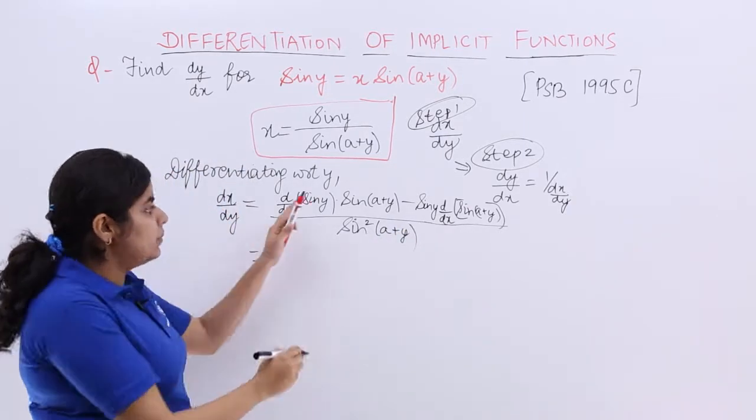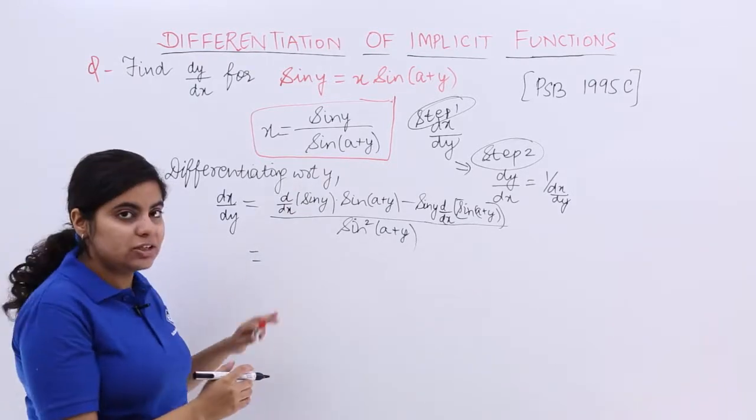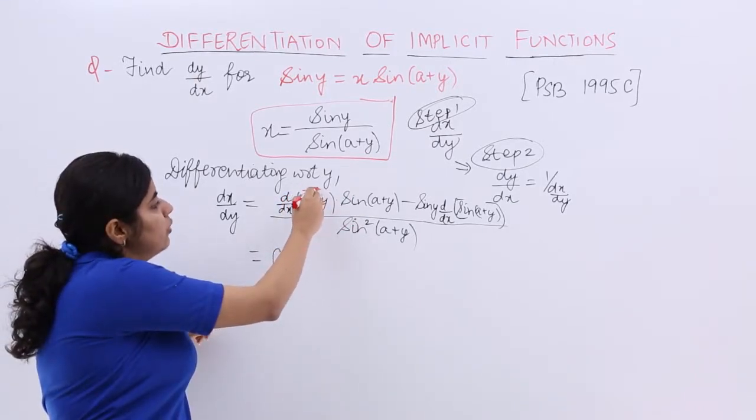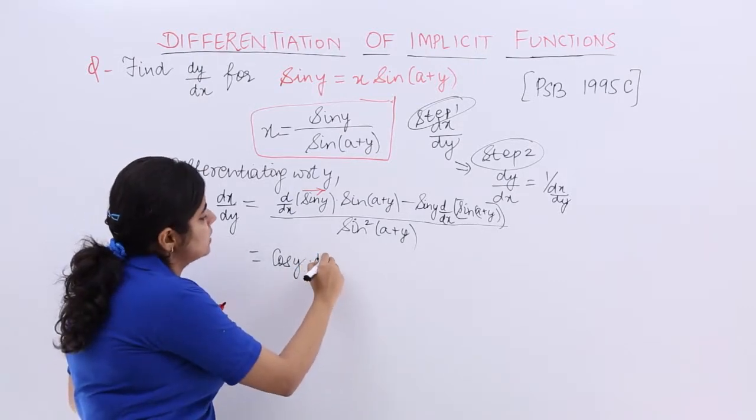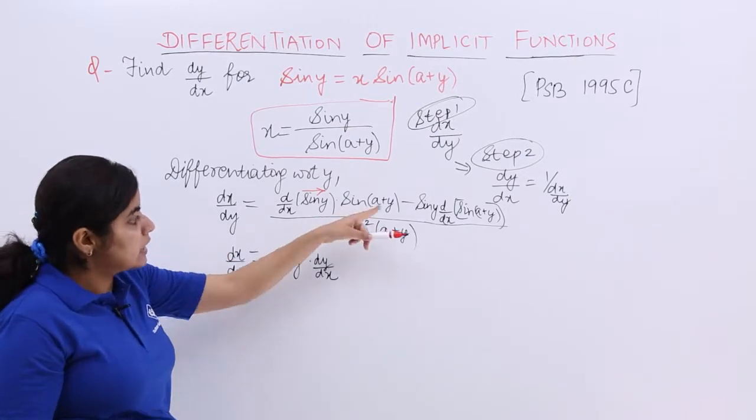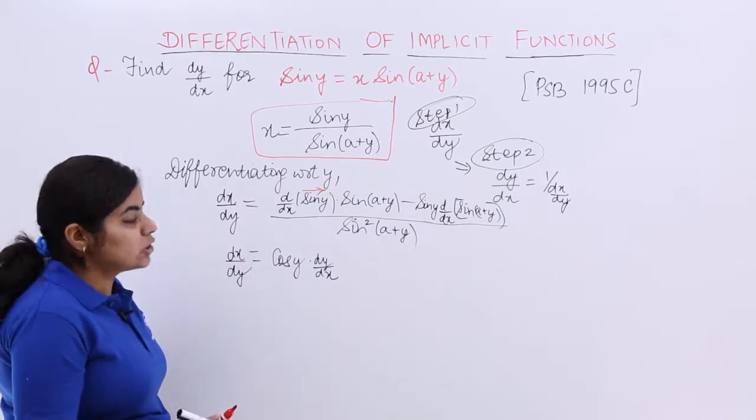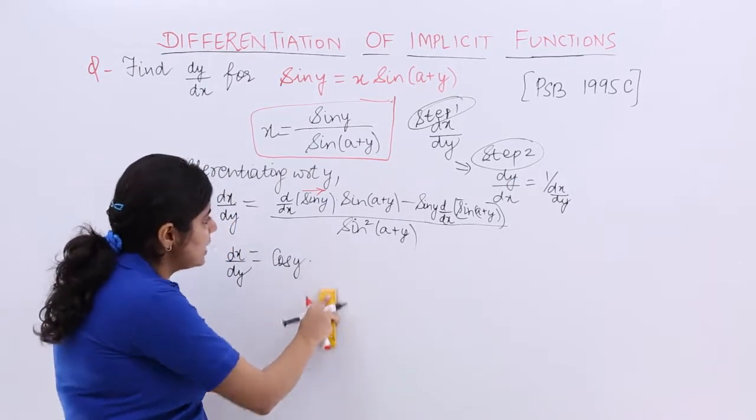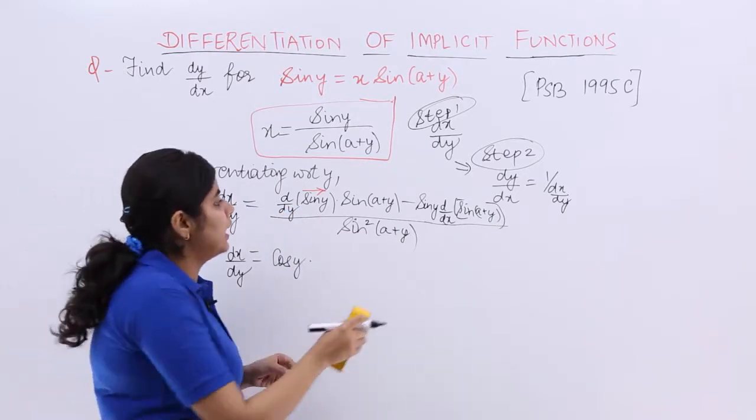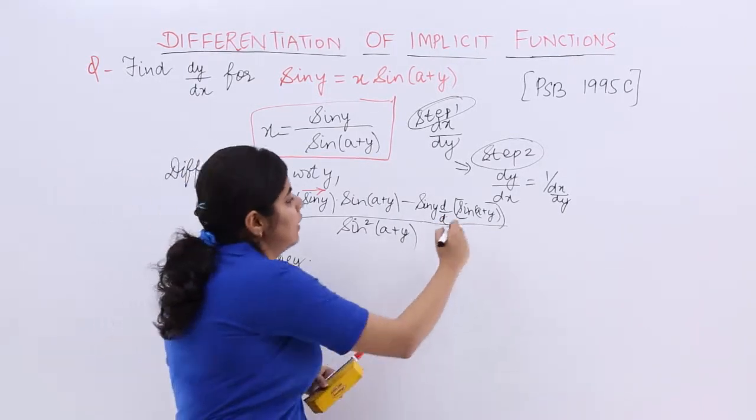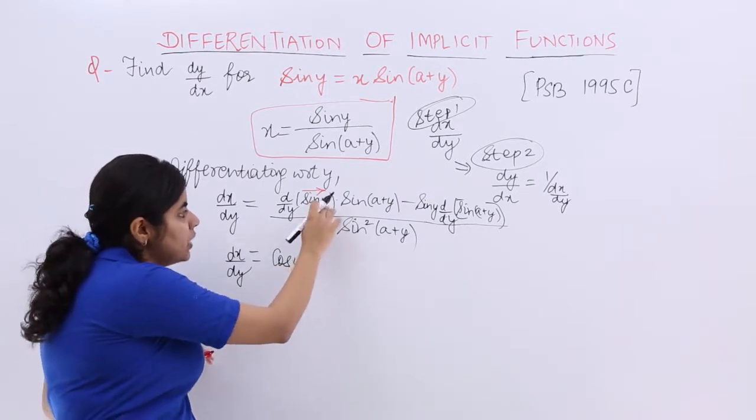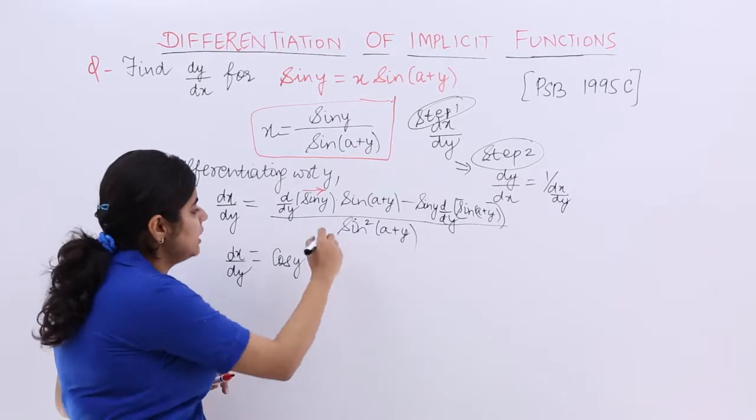Now, d/dy of sin y: sine's differentiation is cos y, and y's differentiation is 1 because this is the application of chain rule. Differentiation of y with respect to y is 1. So d/dy of sin y: differentiation of sin is cos y, differentiation of y with respect to y is 1, and sin(a+y) follows as it is.